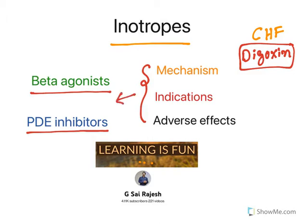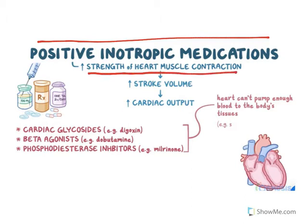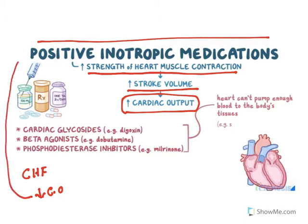Positive inotropic agents increase cardiac contraction — their job is to increase the strength of heart muscle contraction, which results in increased stroke volume and increased cardiac output. The major symptom of congestive heart failure is reduced cardiac output, so positive inotropic agents are used to treat it. There are three major classes: cardiac glycosides, beta agonists, and phosphodiesterase inhibitors. In the previous class I explained cardiac glycosides; in this class we will cover the remaining two.